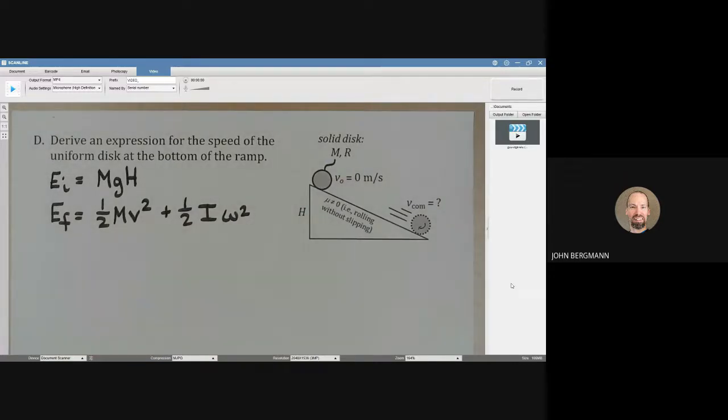Now that looks like a lot of variables there, and it is. And we need to find one expression for the speed. This v is what we need to find here.